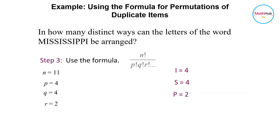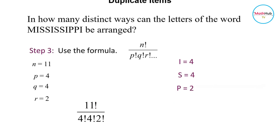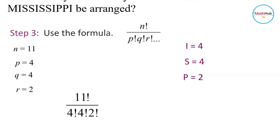So therefore, the number of distinct permutations are 11 factorial, that is the number of all the letters in the word MISSISSIPPI, divided by 4 factorial. That is the total number of I's. And 4 factorial is also the total number of S in the word. And the 2 factorial here represents the number of P's in the word MISSISSIPPI.